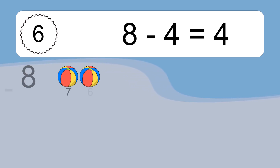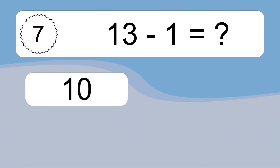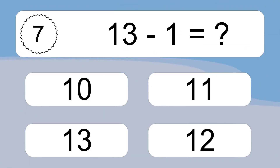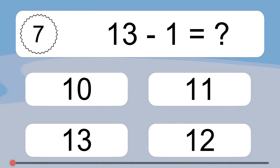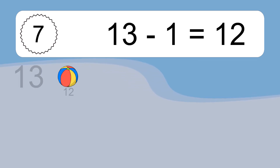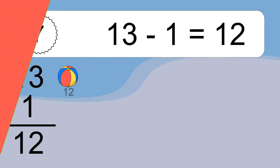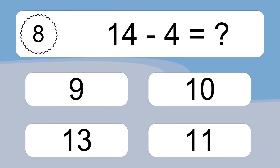Eight minus four equals what? Eight minus four equals four. Let's count it: 7, 6, 5, 4. Thirteen minus one equals what? Thirteen minus one equals twelve. Let's count it: 12.